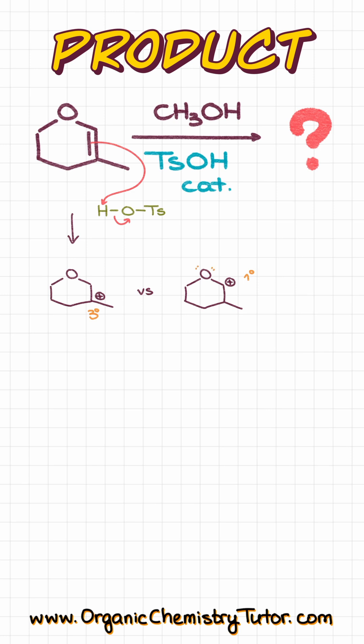In this case, our carbocation on the right side is stabilized by resonance. So, it's not actually a primary carbocation, but rather a resonance-stabilized carbocation, which means that we are going to go with this carbocation and not with the tertiary one, because the one on the right is more stable.